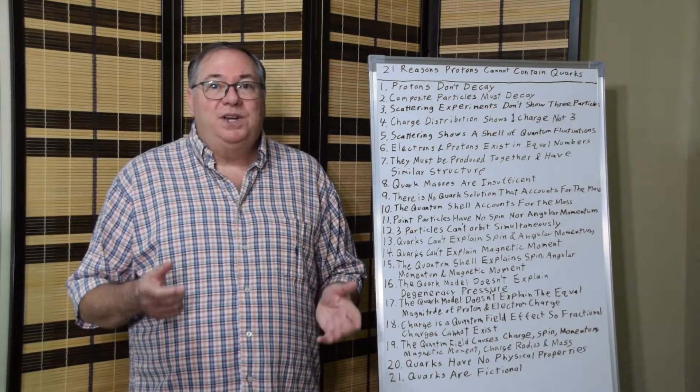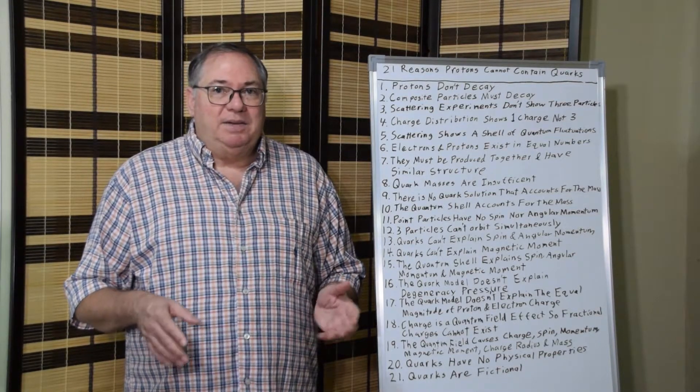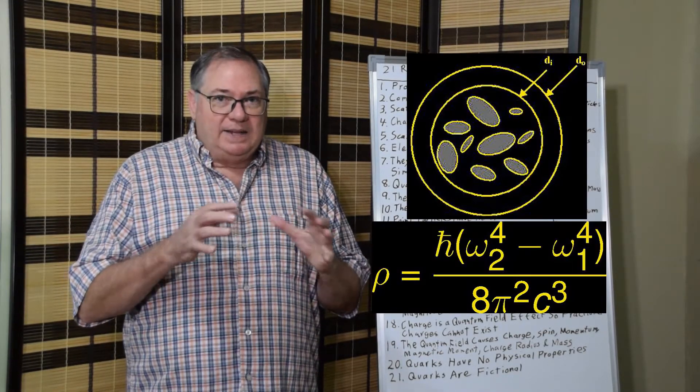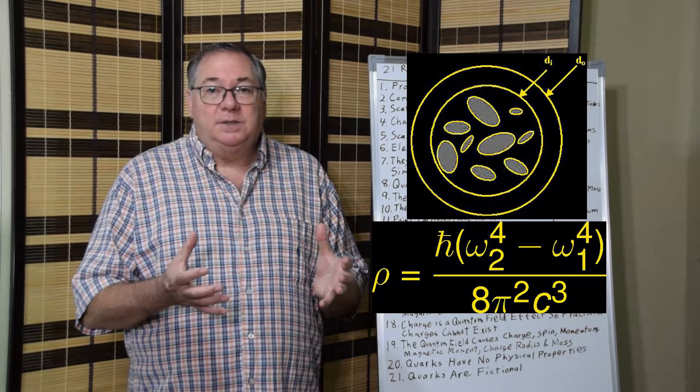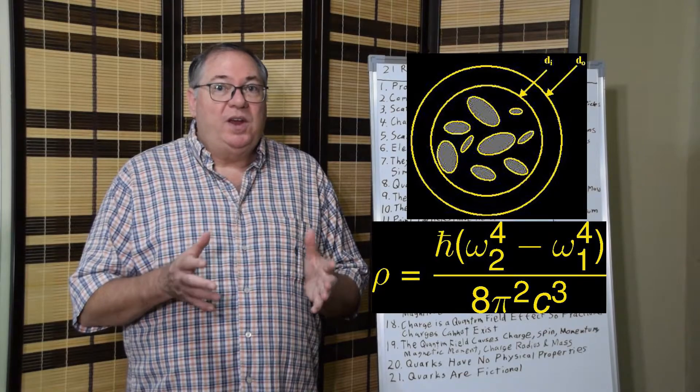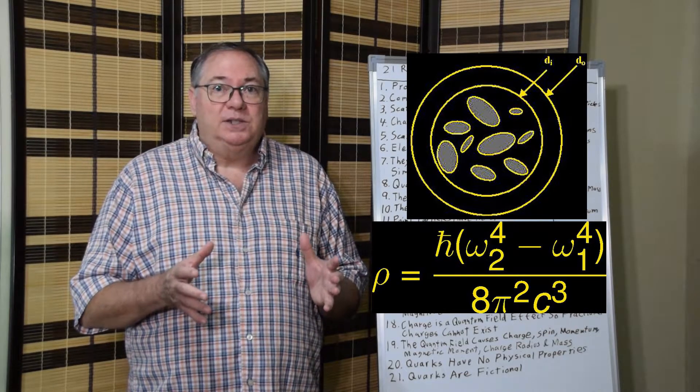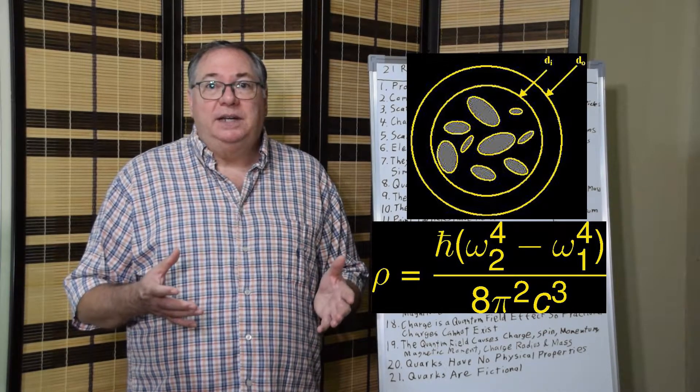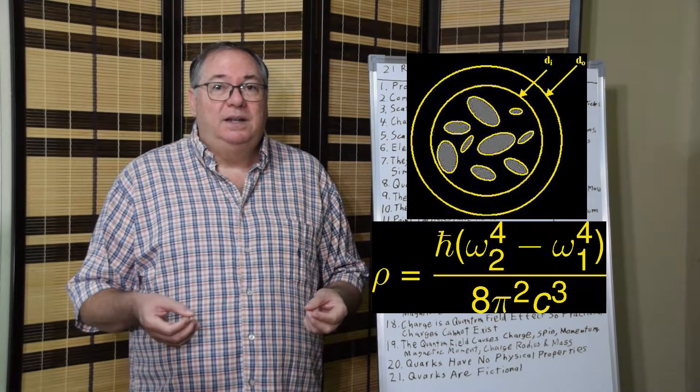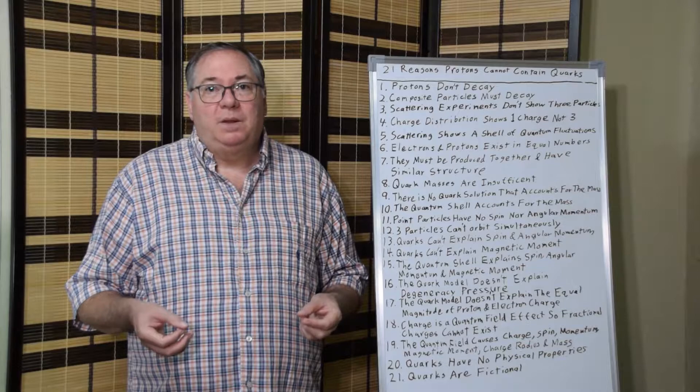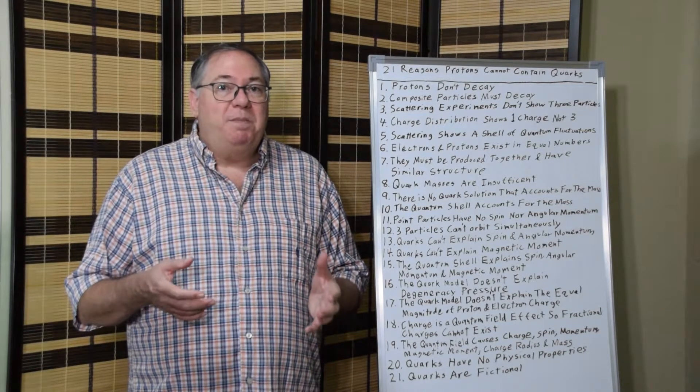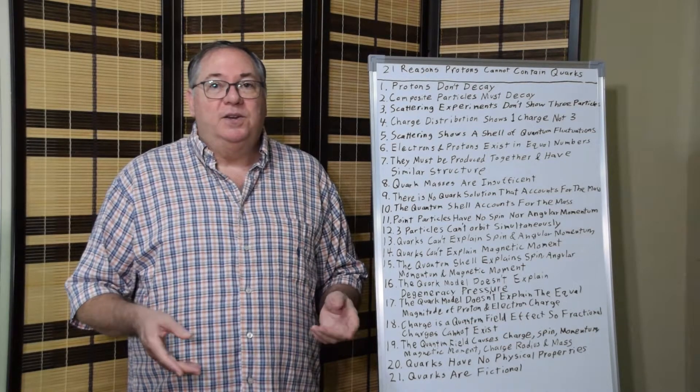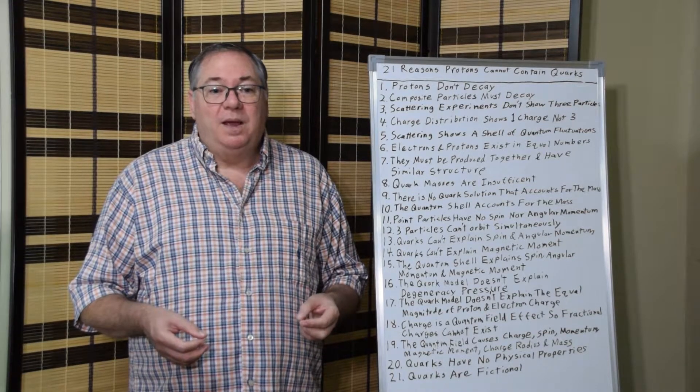Now ten, the quantum shell accounts for the mass. As I've discussed in previous videos, I'll link below, if you take the quantum shell that we know from scattering experiments, and you say, well this shell is going to displace other quantum fluctuations with the wavelength equal to the diameter of the shell. If you calculate the amount of energy displaced by a shell, it equals the mass of the proton. So the mass of the proton comes from this quantum field shell around it, and it has nothing to do with the quarks inside, hypothetical quarks inside.